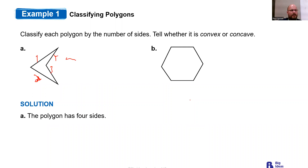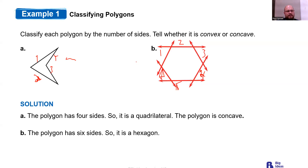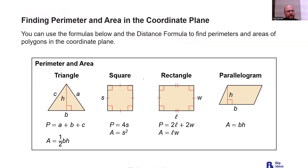For part A, there are four sides, so it is a quadrilateral. For part B, there are six sides, so it is a hexagon. The first one was caved in on one side, so it's concave. The second one has all angles pointing outward, so it is convex. Again, most of the polygons we deal with are convex.